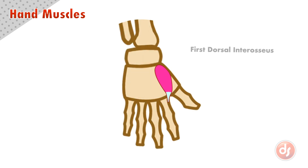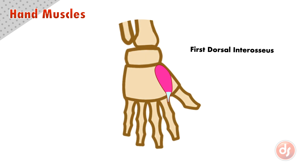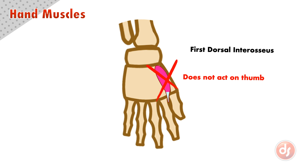On the back of the hand, the first dorsal interosseous anchors to the metacarpals and acts on the phalange of the index finger. If it contracts, it will pull the index finger away from the other fingers. The movement of this muscle can be confusing because it anchors to the thumb — it seems like it should pull the thumb in. But that action is performed by other deeper muscles. The first dorsal interosseous does not act on the thumb. However, when the thumb has been pulled in, the first dorsal interosseous will compress, bulging out and becoming more prominent, seeming like it is in action even though it is not.